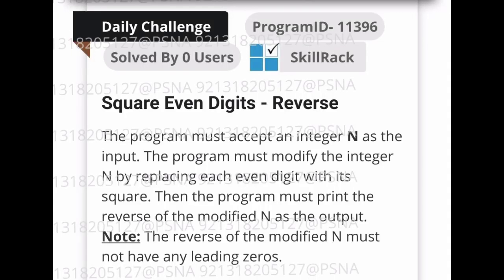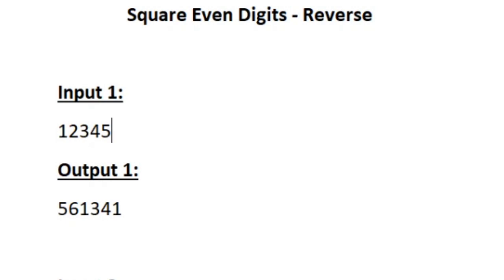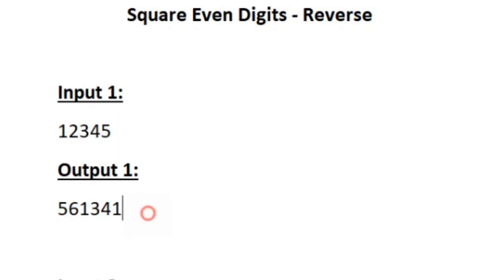This is the question asked in today's skill track daily challenge. We are given an integer as input and we also have to print an integer as our output. Our task is to find all the even digits present in the given integer n.